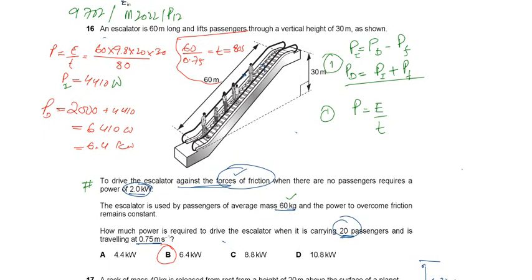First thing first, we need to find out the power required to lift the passengers. Then we add the power required to work against the friction, and we will get the driving power on the whole.